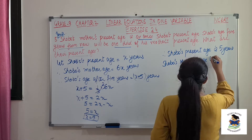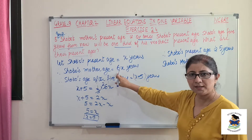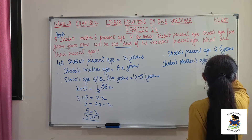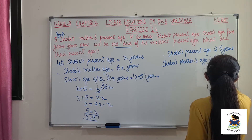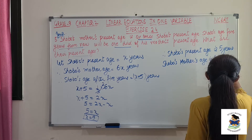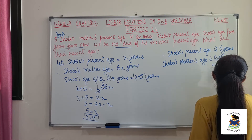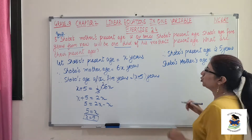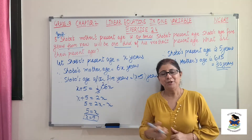So what is his mother's age? It is 6x, that means 6 into 5, which is 30. So mother's present age is 30 years. This is our question number 5.